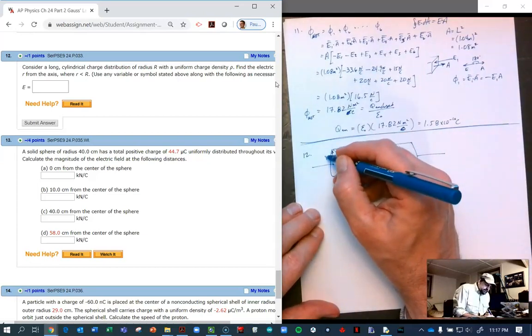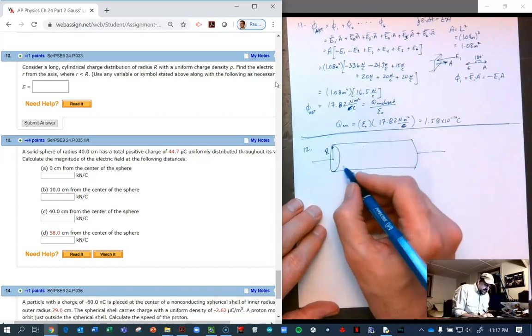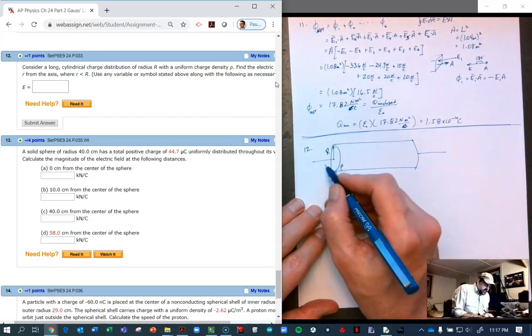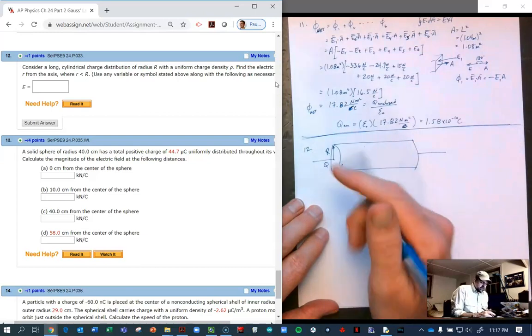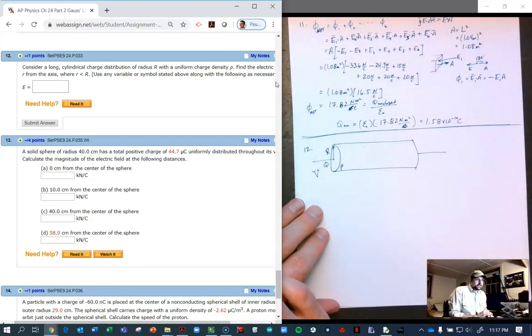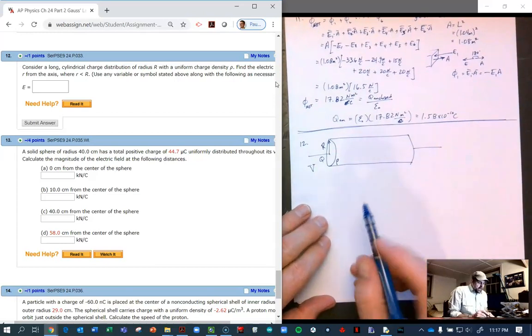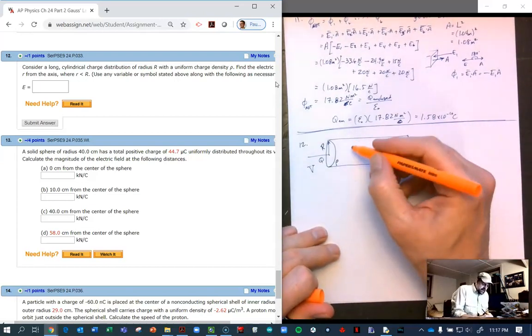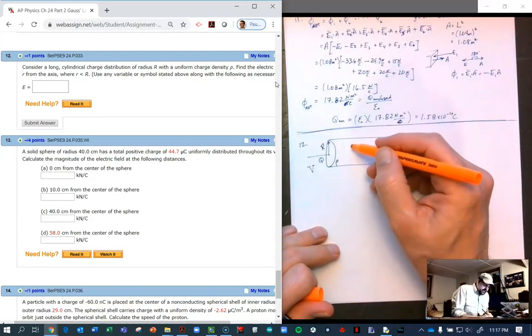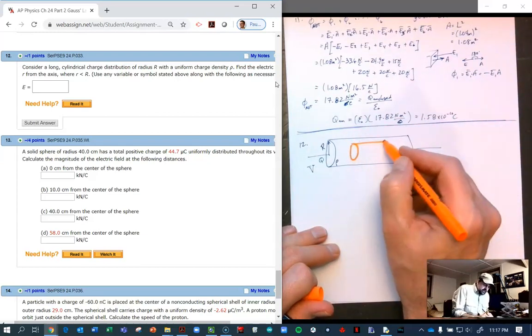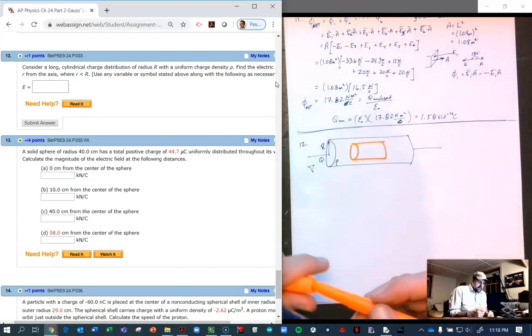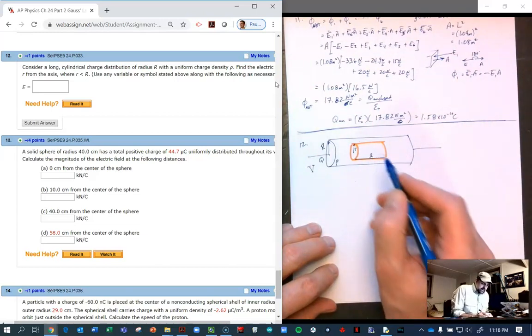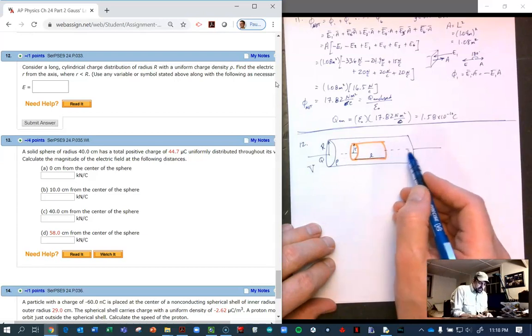It has a charge density ρ, and that whole cylinder has a charge big Q and volume V. We're looking for the electric field inside, so we're going to draw a Gaussian surface mimicking our actual object, a small cylinder inside with radius little r and length L centered on the axis.